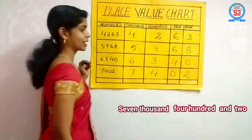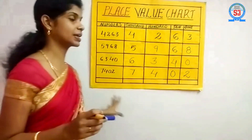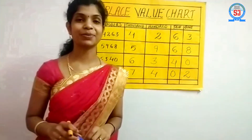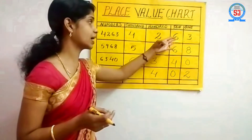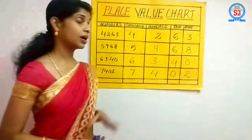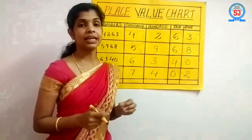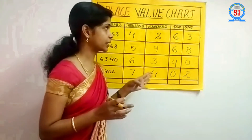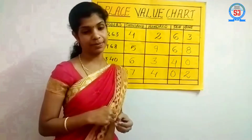Then let's read the next number: seven thousand four hundred and two. Now you know how to read numbers. If you want to write these numbers in words, it is also very easy — you can write four thousand two hundred sixty-three, but you have to know the spelling of four, thousand, hundred. If anyone asks how many ones are there in four thousand two hundred sixty-three, we say three ones; how many tens — six tens; how many hundreds — two hundreds; how many thousands — four thousands. By reading according to the place value, we can find out each digit.